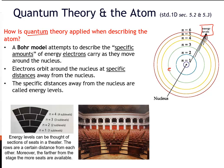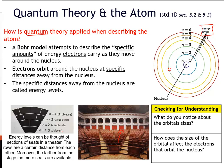Imagine this example of the stadium seating. You notice that every seat in the theater is a specific distance away from each other, and as you go further up, you'll notice that more seats are present. Consider these questions: What do you notice about the orbital size in this picture? How does the size of the orbital affect the electrons that orbit the nucleus? Think about the pictures of quantum that are presented to you.